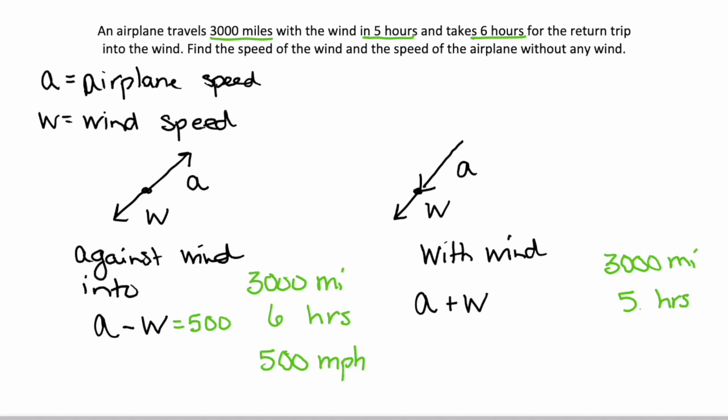And the second option, 3,000 miles in five hours, is a speed of 600 miles per hour. And that makes sense, right? The airplane is being pushed by the wind, so the speed should be faster. 600 miles per hour.